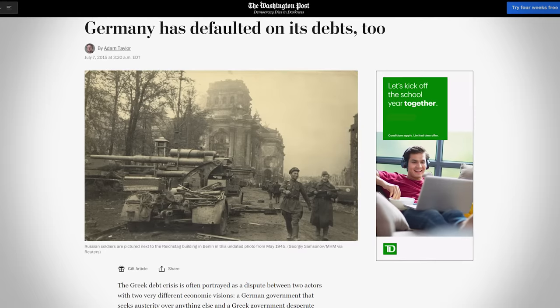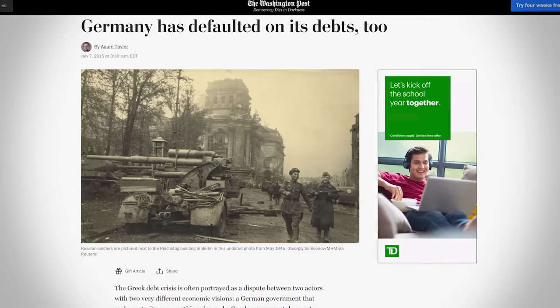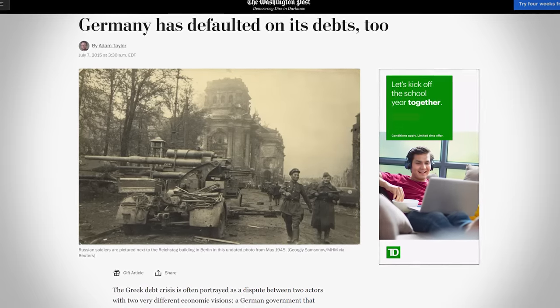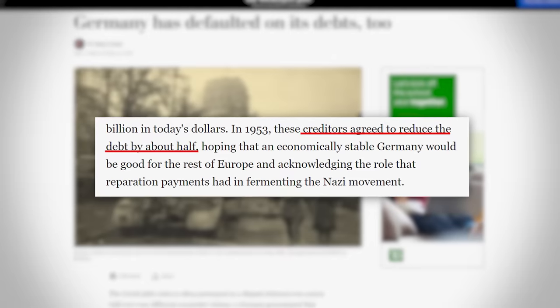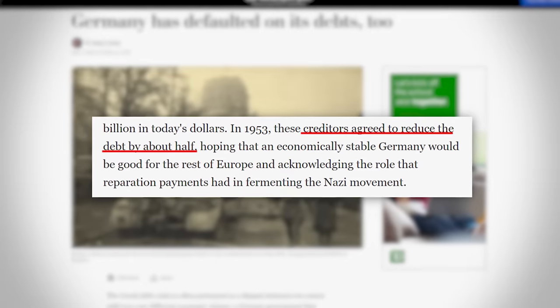Germany, for example, was a country that was able to recover from its crippling debts tied to the two world wars. But a big part of that was a 50% haircut that the creditors to the country took on for the sake of preventing another rise of Nazism.